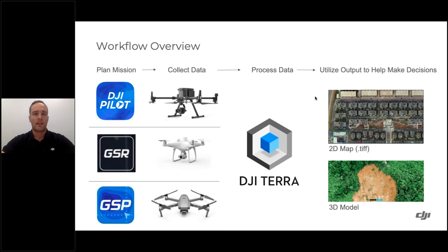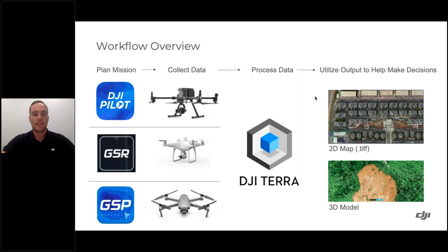Within the DJI ecosystem, there's a workflow overview that many public safety folks aren't fully aware of. We have mission planning tools within our DJI apps and software — DJI Terra — to process that data into outputs. At a high level: plan the mission, define mission parameters and the area to be mapped, collect data with the drone, process it in DJI Terra, and generate a 2D map or 3D model.